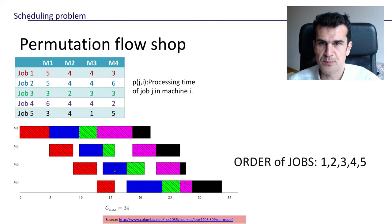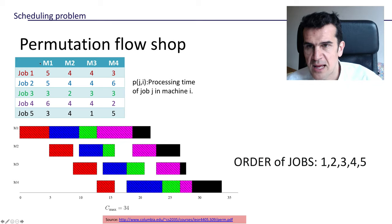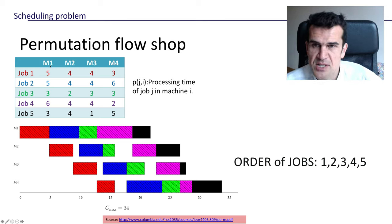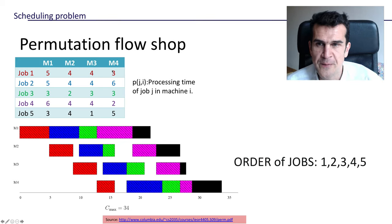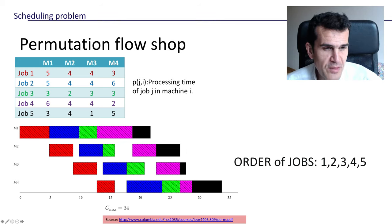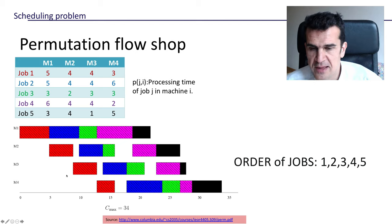Let's see it with an example. Here we've got five jobs we want to process and we've got four machines. This matrix is giving us the processing time of each job in each machine. So basically job one has to be processed in machine one for five time units, then in machine two for four time units, in machine three for four time units again, and in machine four for three time units — and the same applies for the different jobs. This is a flow shop problem. So once we fix an order for the jobs, in this case the order one, two, three, four, five, that order has to be kept throughout all the machines.